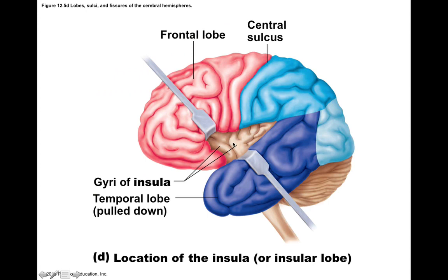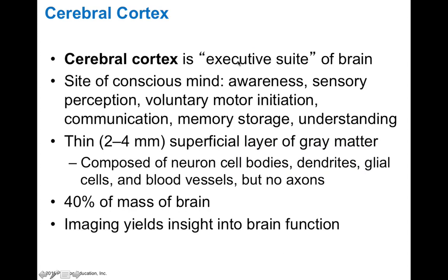The insula is the fifth lobe, locked in between the frontal and temporal lobes in the lateral sulcus; if you pull these apart you find the insular lobe, which is a deeper infolding of the cerebral hemisphere. The cortex is the executive suite of your brain — it's the site of consciousness, including awareness, sensory perception, voluntary motion, communication, memory storage, and understanding. Those gyri we discussed serve very specific functions for these mental processes. The cortex is a thin layer of about two to four millimeters of gray matter made of neuron cell bodies, dendrites, glial cells, and blood vessels, without many axons, as those project into the white matter.